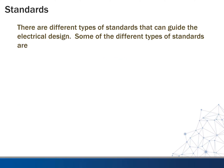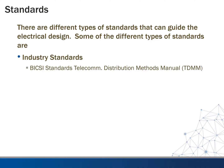Now let's look at standards and how these affect electrical design. The first type is industry standards. Some examples would be Bicsi standards — Bicsi is an organization that has to do with telecommunication design and distribution. They produce telecommunication distribution method manuals, referred to as TDMM. These are the documents used as the basis for a certification called RCDD, which is Registered Communication Distribution Designer. This is becoming more prevalent because most government agencies now require an RCDD to review and seal telecommunication drawings, in addition to an electrical engineer seal.